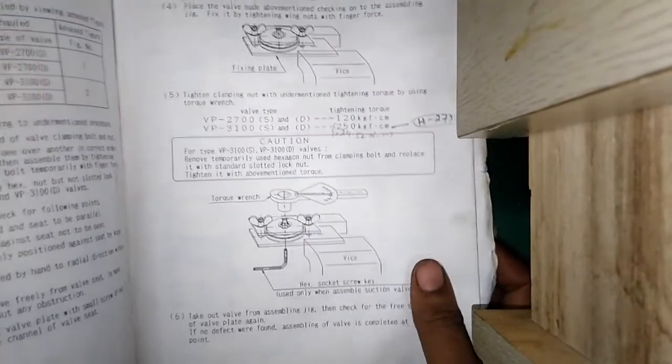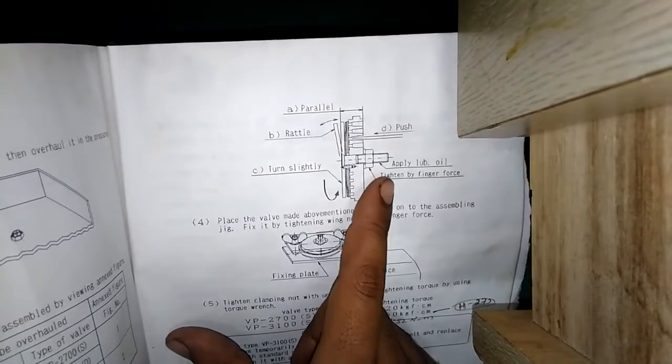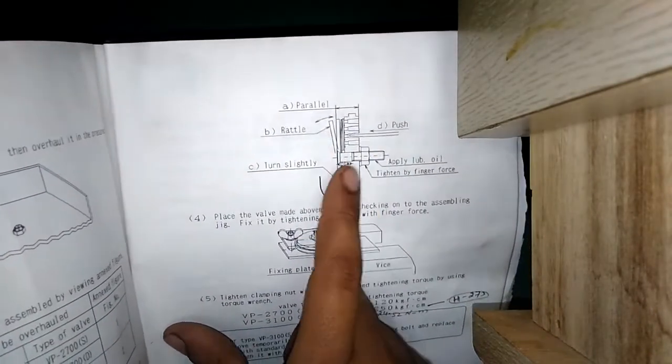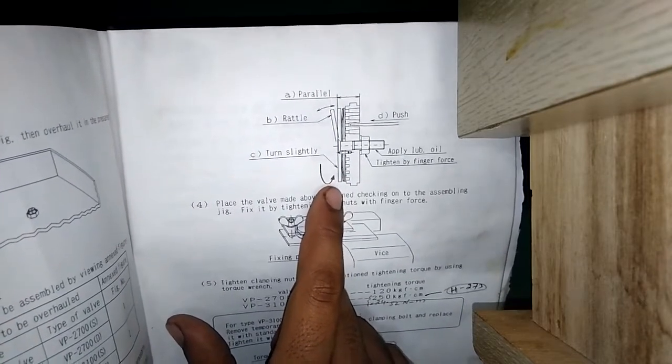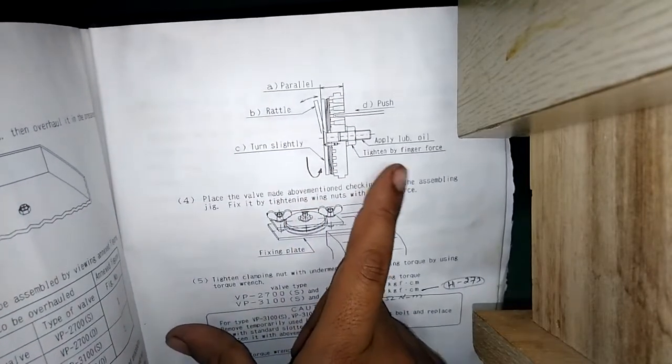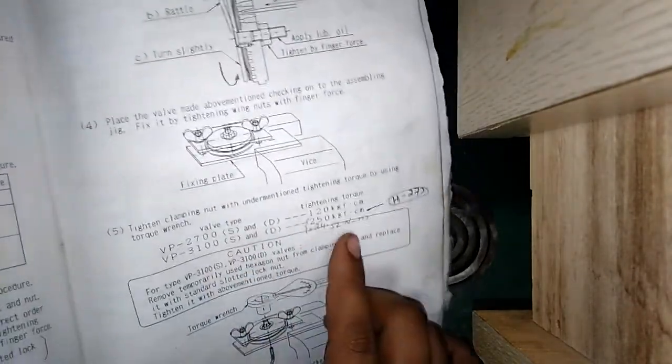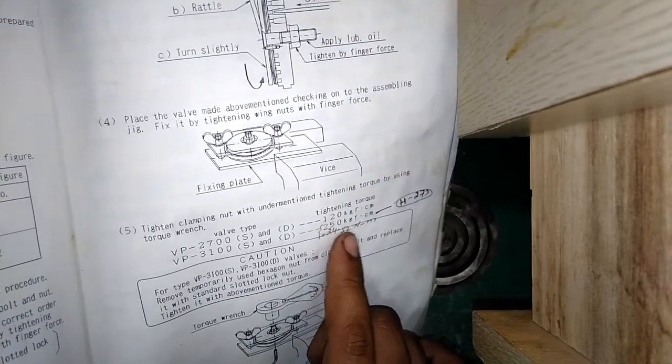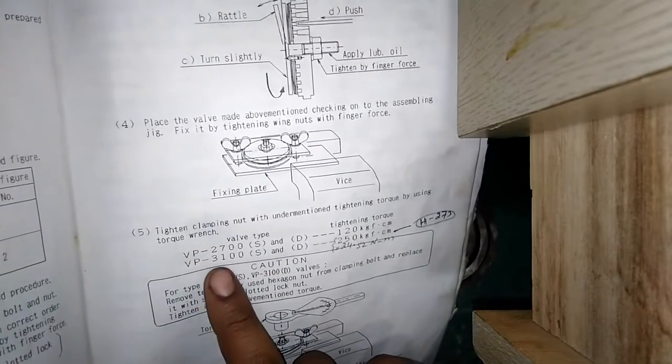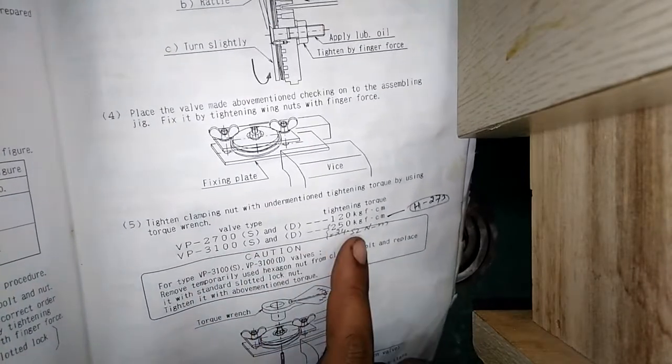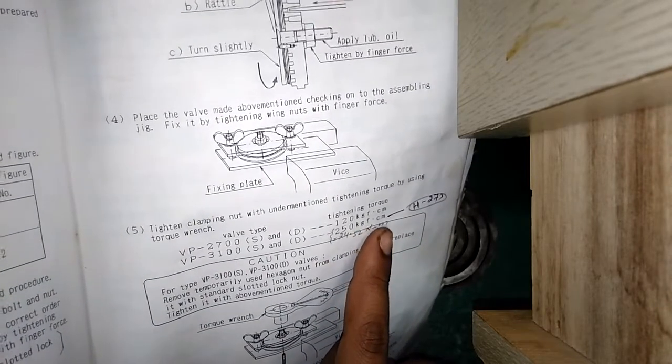This is the parallelism of this valve. We have to check the five degree turn, tightened by finger force, and then torque.